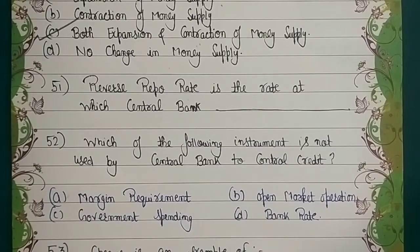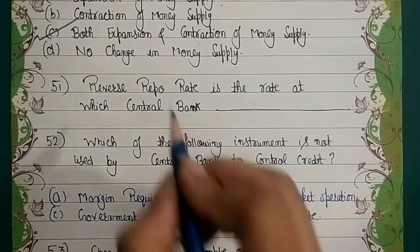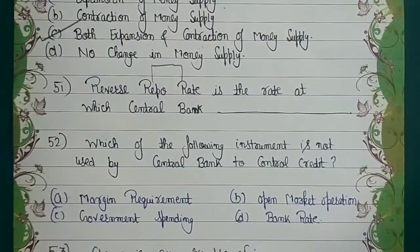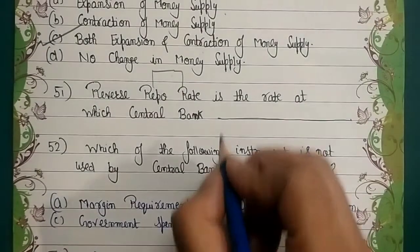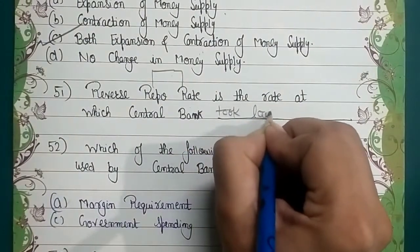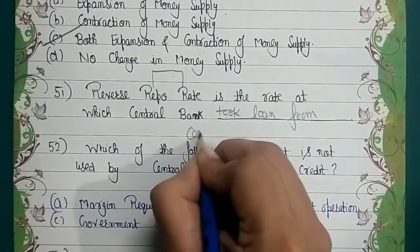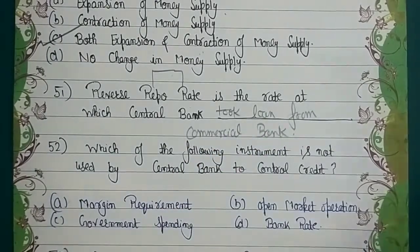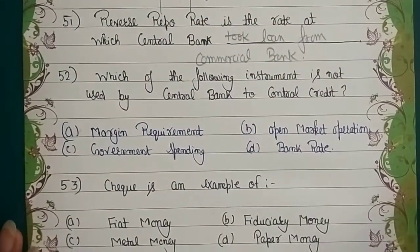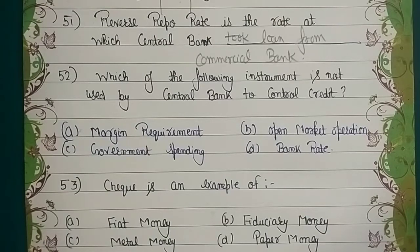Question asked: 'Reverse repo rate is the rate at which central bank dash.' Repo rate is the rate at which the central bank (RBI) gives loans to commercial banks for a short period. So reverse repo rate is the rate at which the central bank takes loans from commercial banks — when commercial banks lend to RBI. Next question: which instrument is not used by the central bank to control credit? Quantitative instruments: bank rate, CRR, SLR, open market operations. Qualitative instruments: margin requirement, moral suasion, quota, etc.